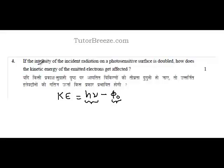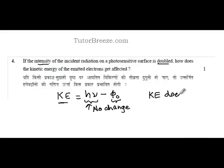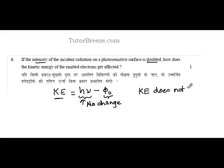If the intensity is doubled, there is no change in the energy of the incident radiation. This means the kinetic energy will not change. The answer to this question is: the kinetic energy does not change on increasing the intensity of the incident radiation.